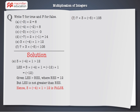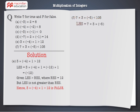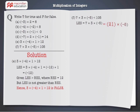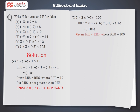F: 7 into 3 into minus 5 is less than 105. LHS equals 7 multiplied by 3 into minus 5, which equals 21 into minus 5, which equals minus 105. Given that LHS is less than 105, therefore LHS is less than RHS. Hence, 7 into 3 into minus 5 is less than 105 is true.